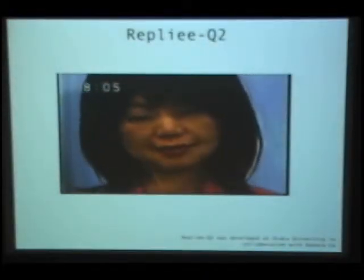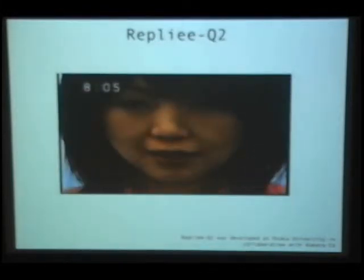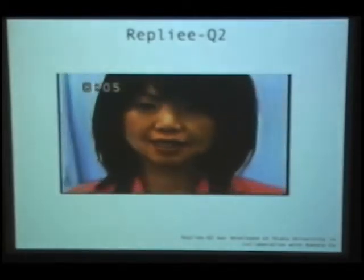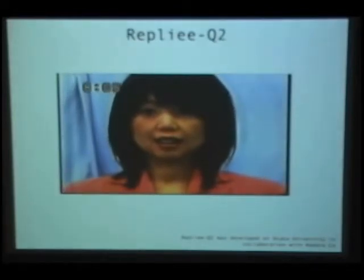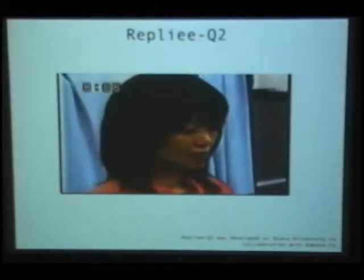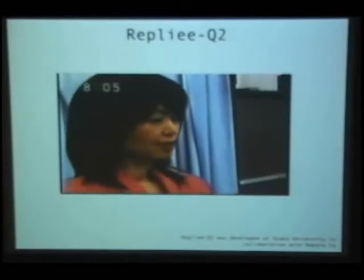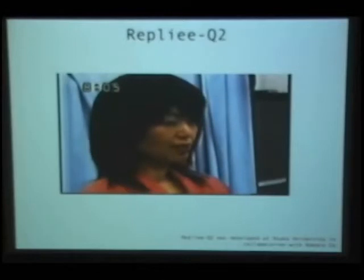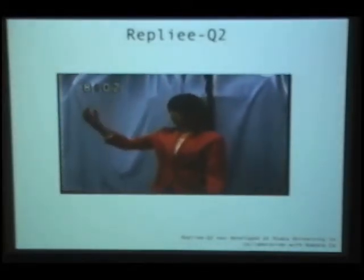I'll tell you about one brain imaging study that we have done and some new directions with CalIT support. This is an android developed in Japan in our collaborator Hiroshi Ishiguro's lab. She doesn't walk, but she can move the upper body, the face, and the head. She's been modeled after a real person, so her face is actually molded and copied onto the robot. That person is a TV news presenter, so the android is also doing presenting-type movements.